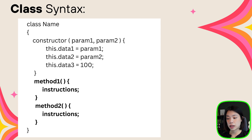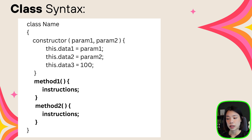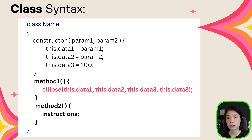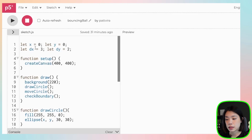The second piece is the functionalities, or methods. The way you write a method is like writing a function — but within a class you don't need the keyword function, you just write the name. Then you write the commands you want that function to include. If you use any data specific to that object, don't forget to use this dot. Now I want to show you how to write an object-oriented program by turning this procedural program into an object-oriented structure.